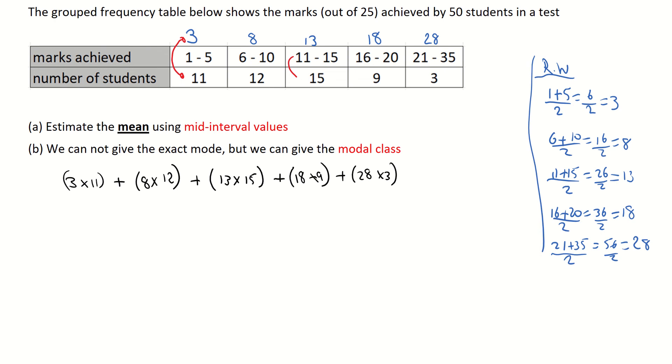I then like always when I'm finding the mean I divide by the number of students. Now just be careful, what have we here we have 50 students. So just be careful, don't add the amount of boxes. I don't have 5 students.